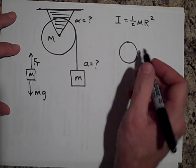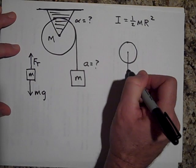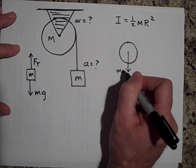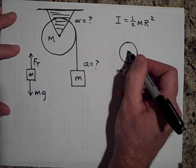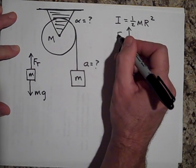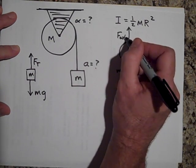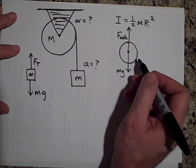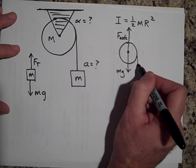And let's draw the wheel. It's got its own weight, the mass of the wheel that's mg. It's got the axle pushing up and it's got the force of tension down.